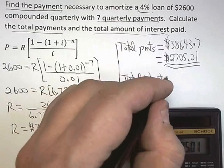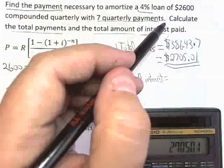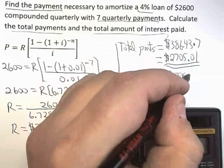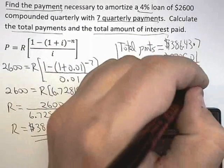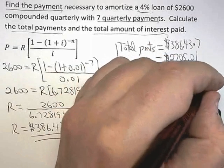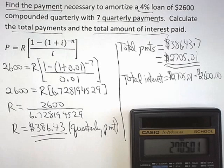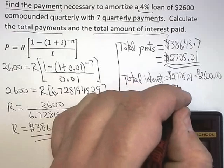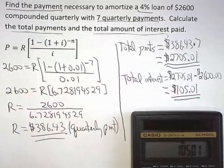It's just how much you paid in minus what you borrowed. So the total interest is what you paid in. That's $2,705.01 minus the amount we borrowed, which was $2,600. And if you punch that out on the calculator, or probably can just do it in your head, you'll get $105.01. So the total interest paid for that entire loan would be $105.01.